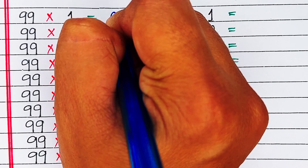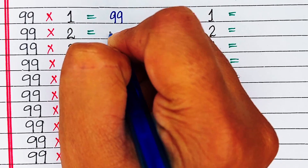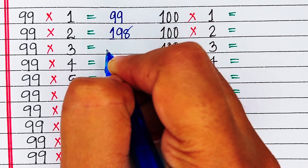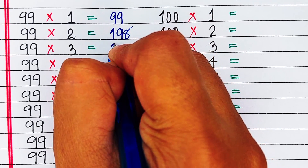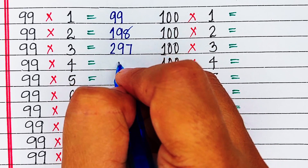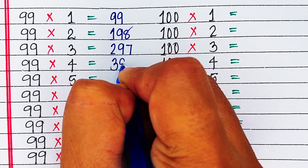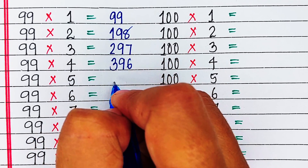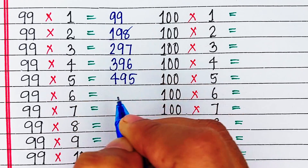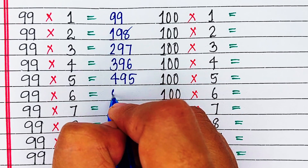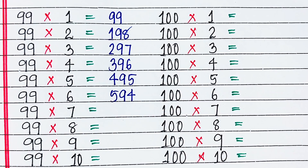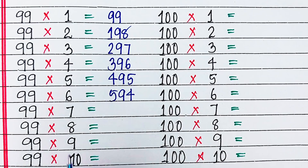Next is table of 99. 99 ones are 99. 99 twos are 198. 99 threes are 297. 99 fours are 396. 99 fives are 495. 99 sixes are 594.